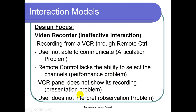Now I say there is no articulation problem — I gave the proper input, the remote has all performance abilities, the VCR is performing, and it is showing me on the panel a red dot, or an R, or the word REC. But the user does not interpret it — I am unable to understand that dot or that symbol. This is known as the observation problem: I gave the proper input, the system had the ability, it started performing, it started showing, but I was not able to understand it.